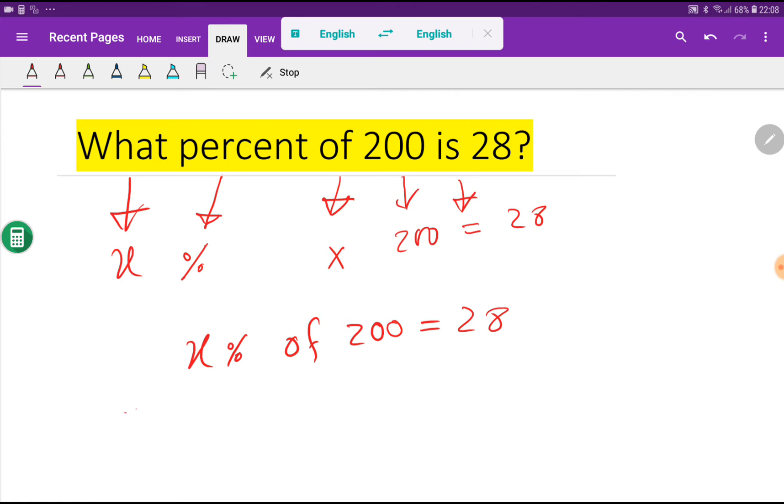Or you can write x by 100 times of means times of, and percentage means 1 by 100, 200 equal to 28.